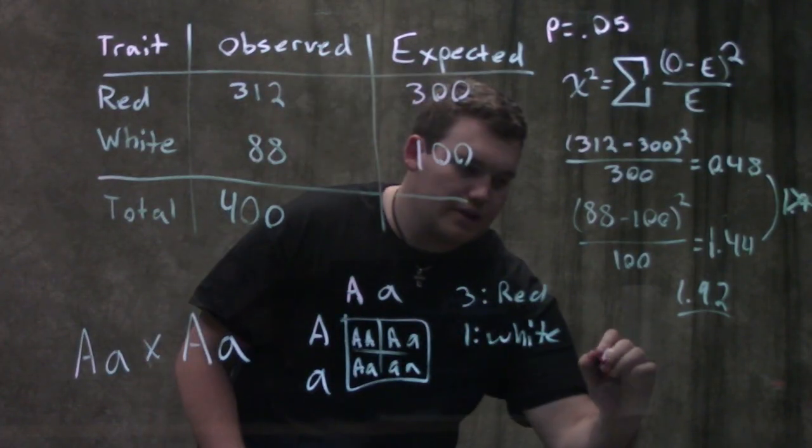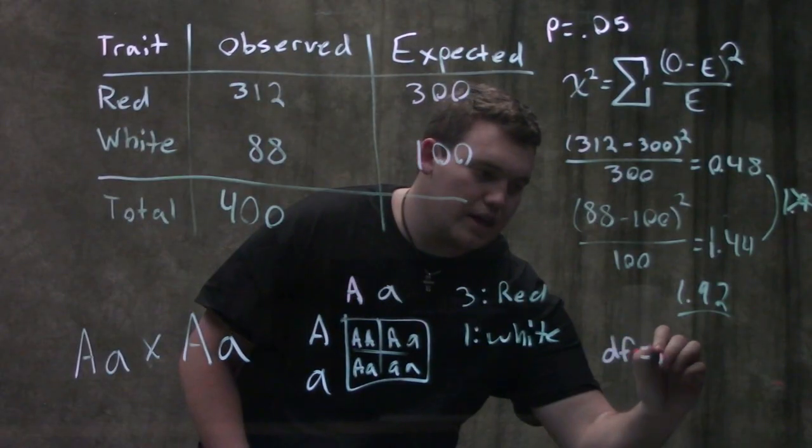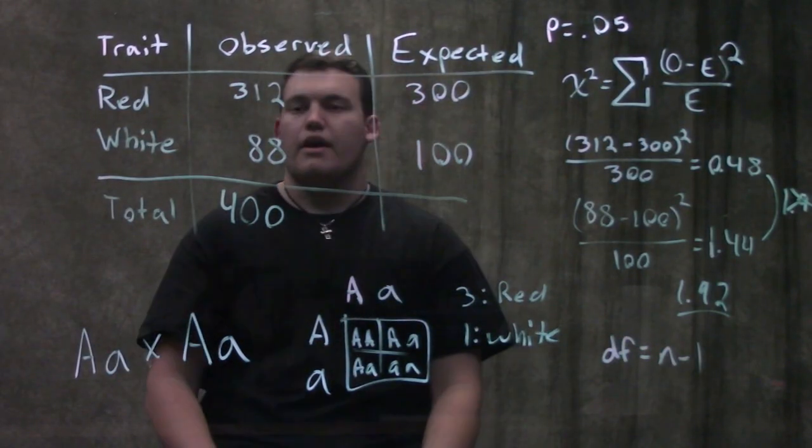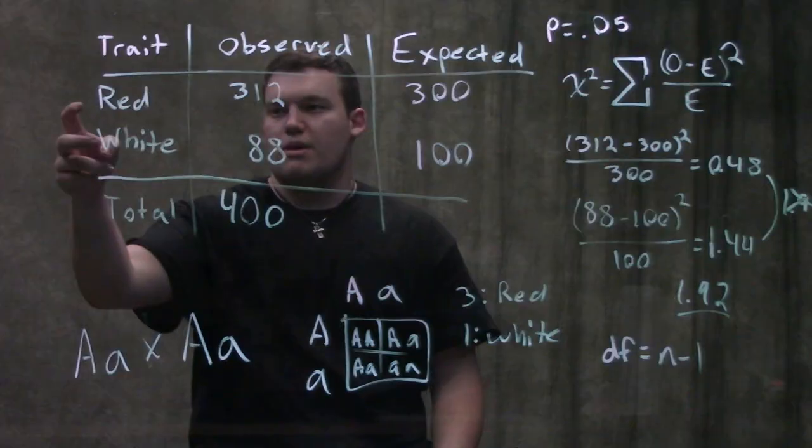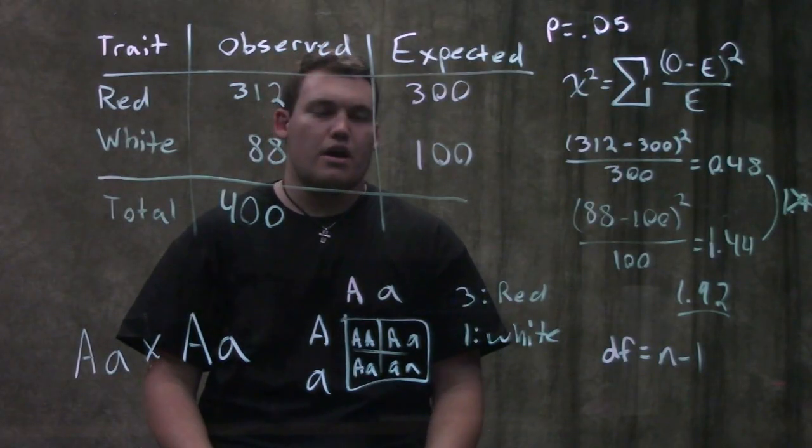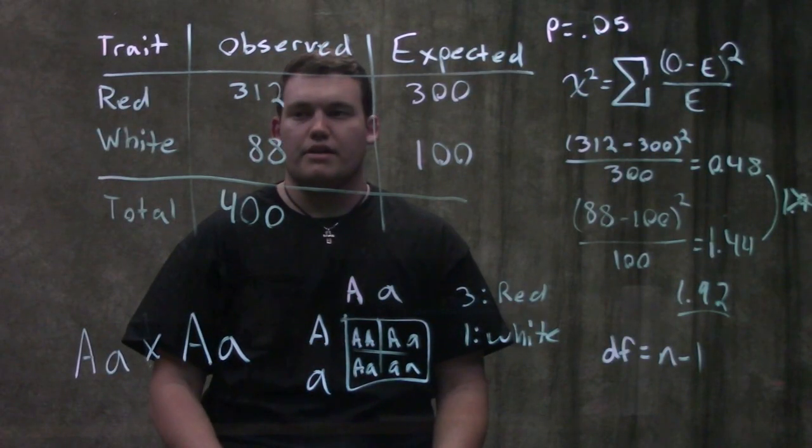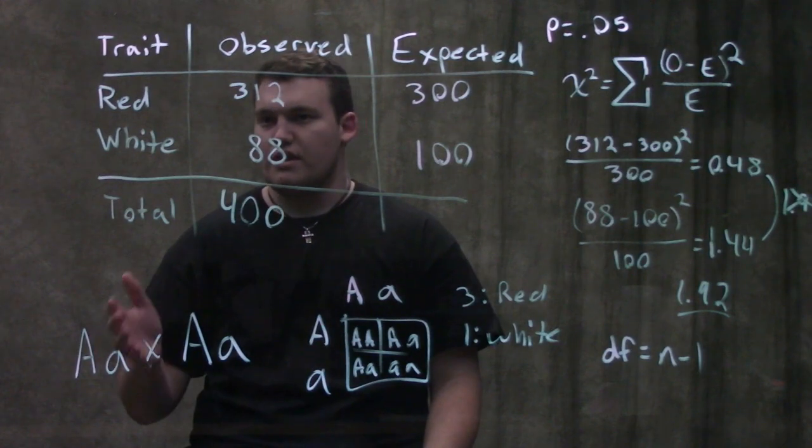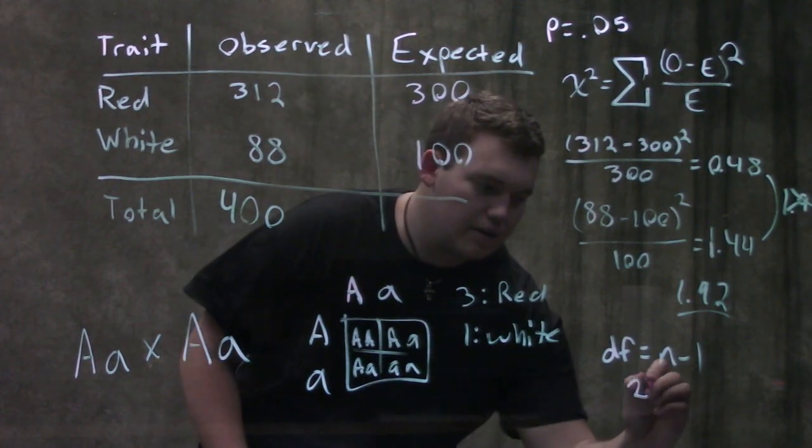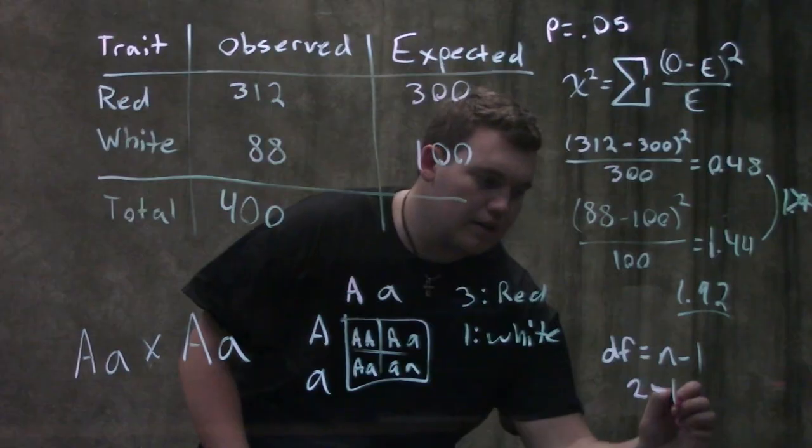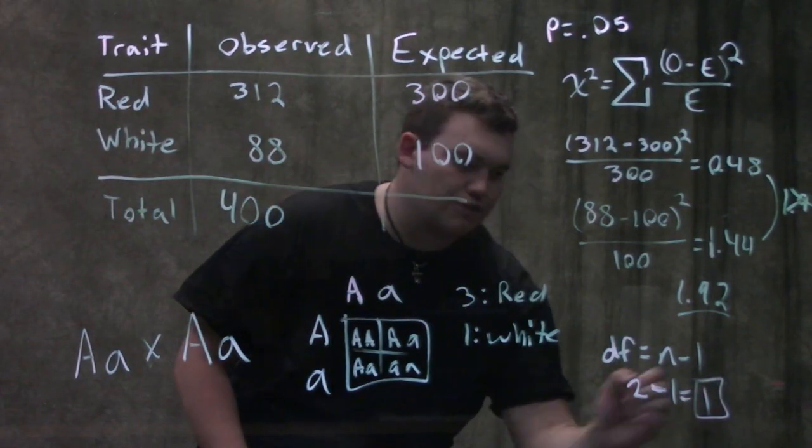For a chi-squared problem, degrees of freedom equals n minus 1. And you're like, well what's n? n is just the number of different traits we have. So in this case, it's gonna be 2 is the number of traits, and so we do 2 minus 1 equals 1. Our degrees of freedom is 1.